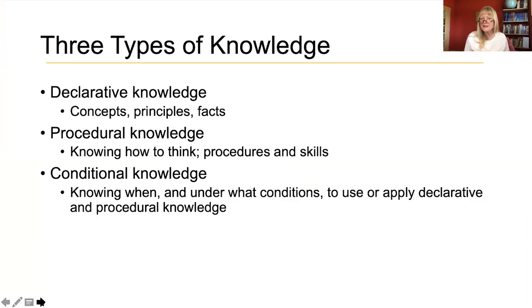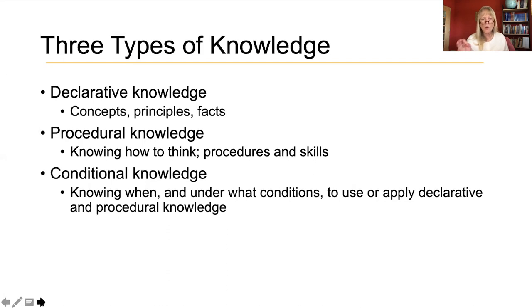There are three types of knowledge. First is what we call declarative knowledge — knowledge about concepts, principles, and facts. Knowing something, like what does time-space compression mean? The second type of knowledge is procedural knowledge, which is all about knowing how to think — the procedures by which someone applies concepts and understandings.